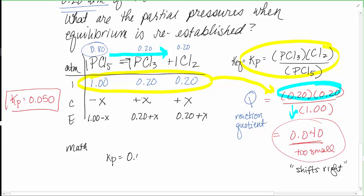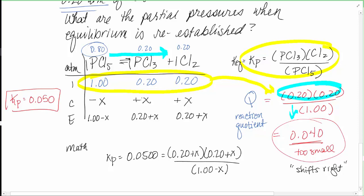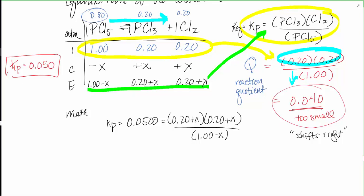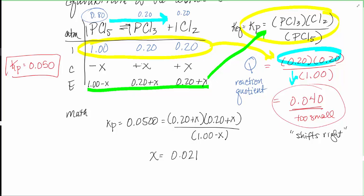Now the math: Kp = 0.050 equals (PCl3)(Cl2) divided by PCl5, so 0.050 = (0.20 + x)(0.20 + x) divided by (1.00 − x). Solving for x gives approximately 0.02. Plugging back in: PCl5 = 1.00 − 0.02 = 0.98 atmospheres, PCl3 = 0.20 + 0.02 = 0.22 atmospheres, and Cl2 = 0.20 + 0.02 = 0.22 atmospheres.